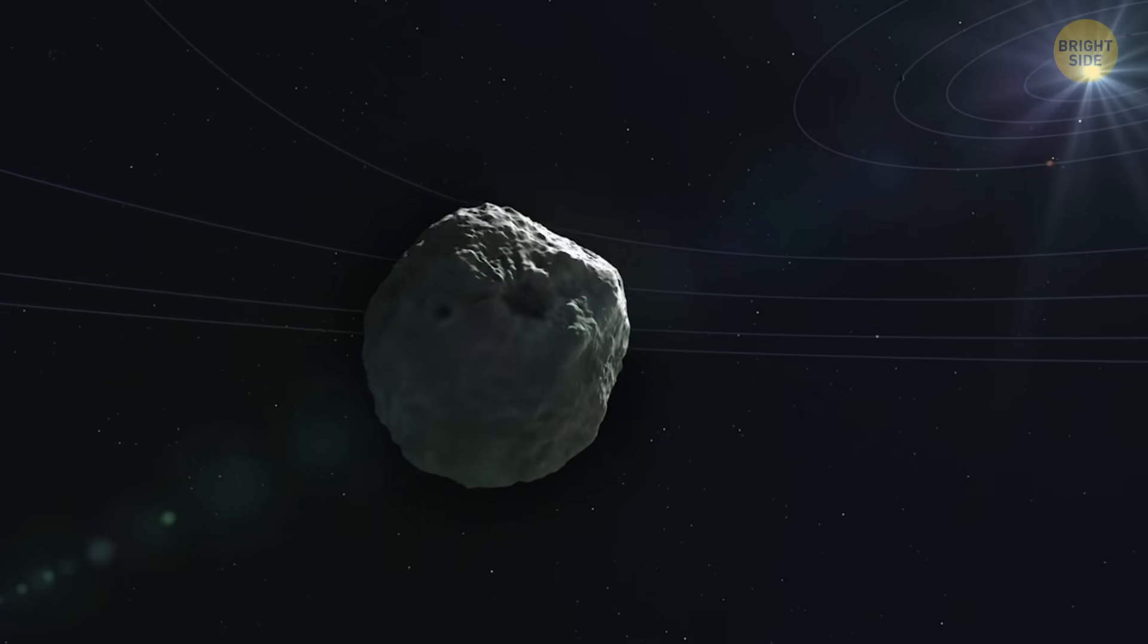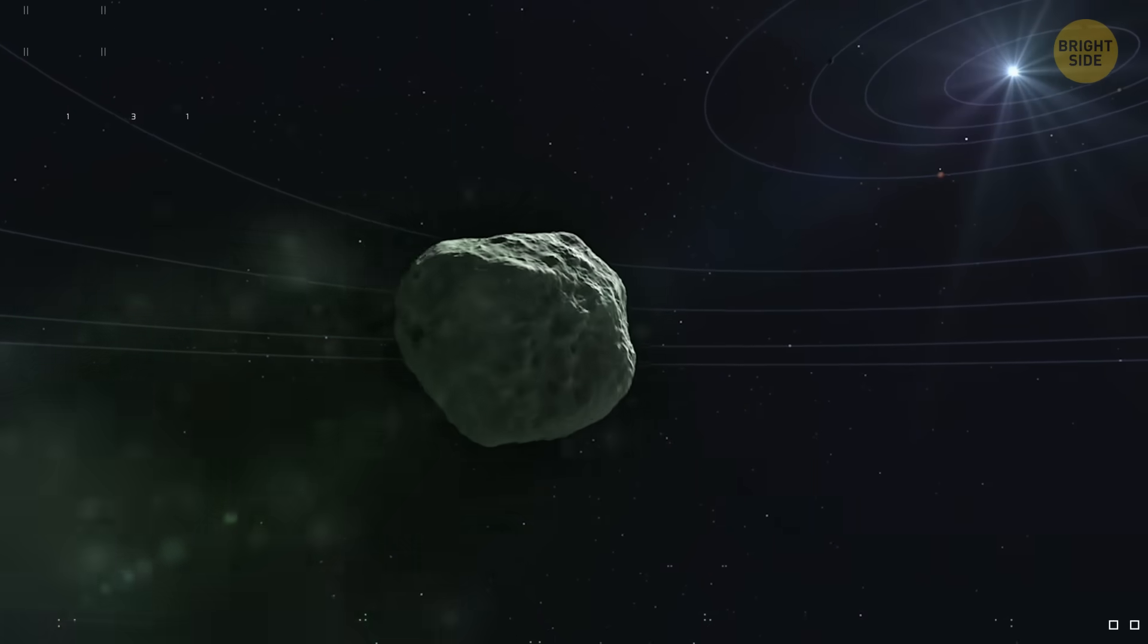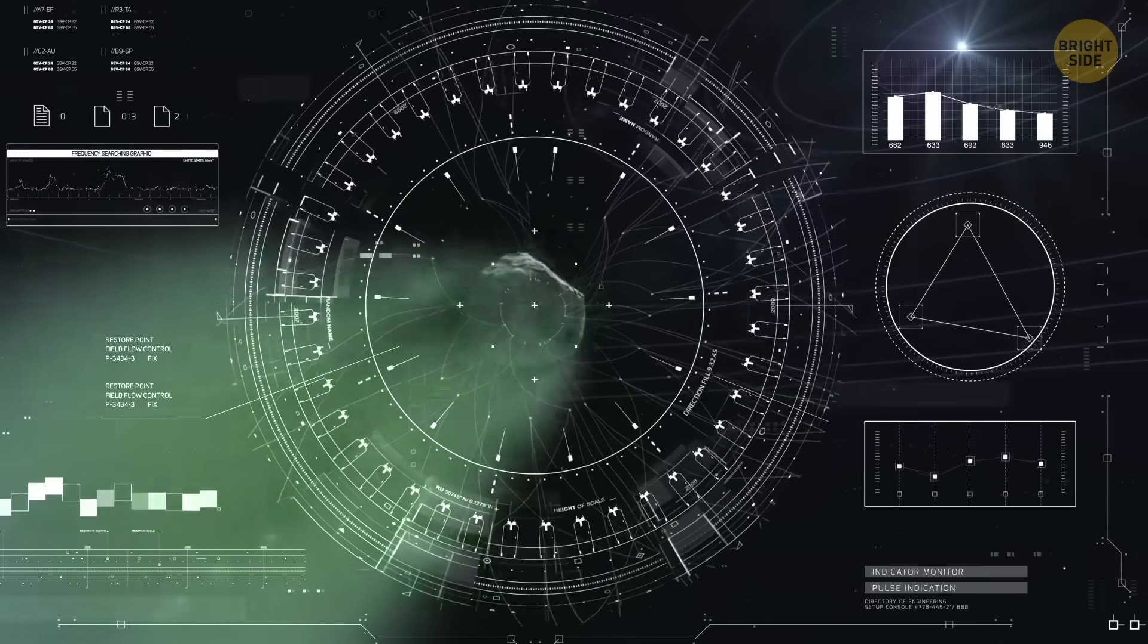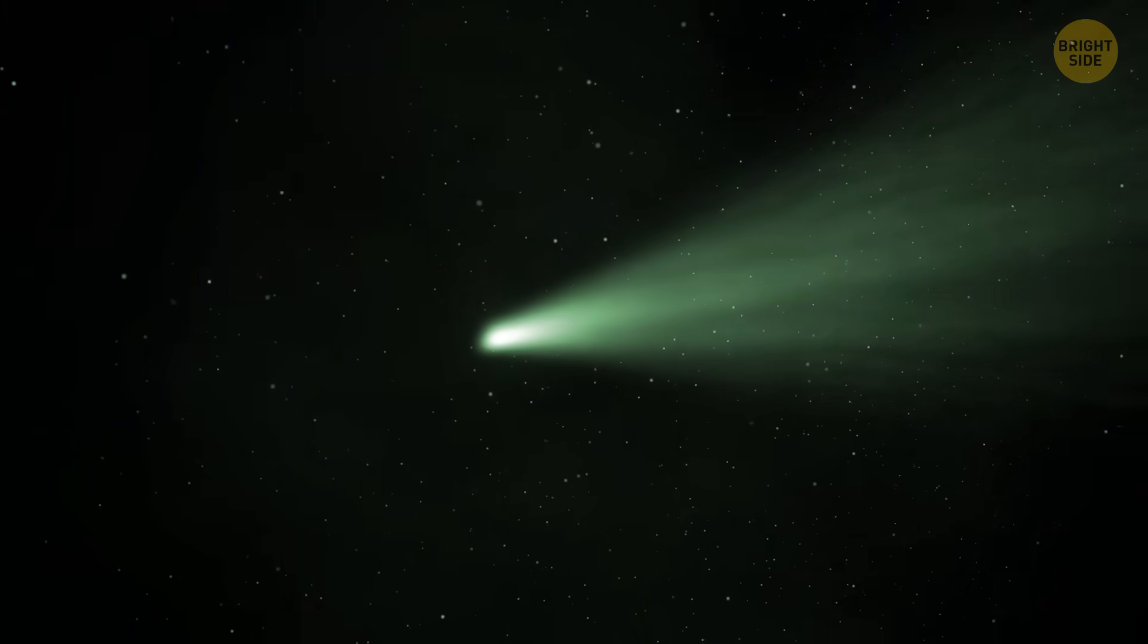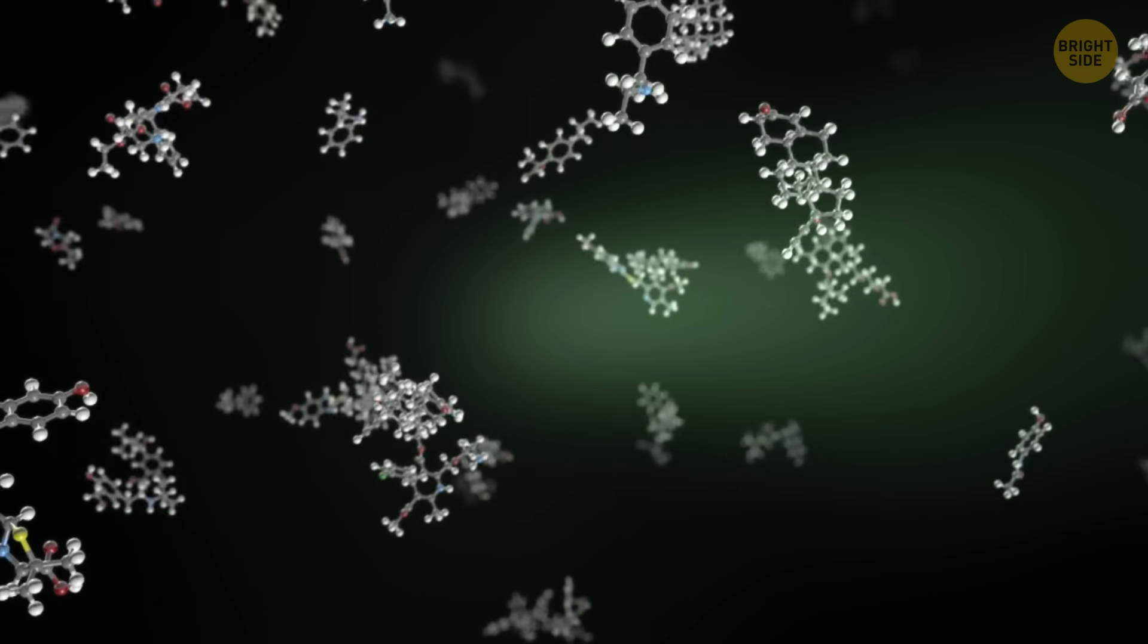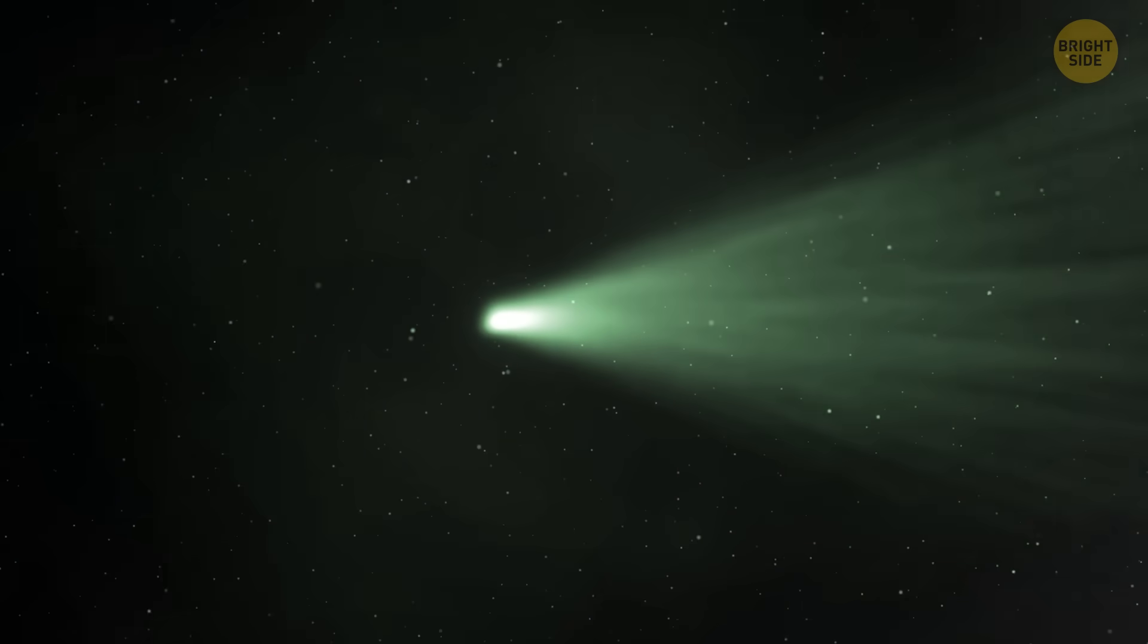But with 3i Atlas, that green color is, well, confusing. The data suggests that this comet is actually low on those carbon-chain molecules. So, the big mystery is, if it doesn't have much C2, how is it glowing green at all? Well, nobody knows.